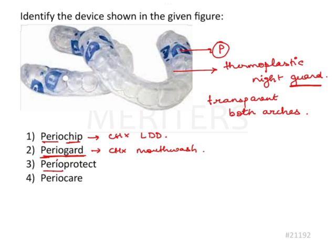Perioprotect is the device shown in the figure, and it has specific indications which we will be seeing in the subsequent part of the explanation. Perio Care is a periodontal dressing.